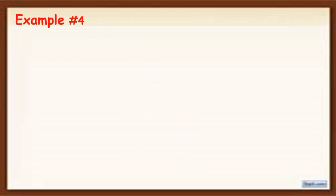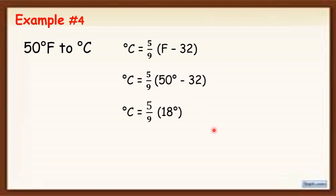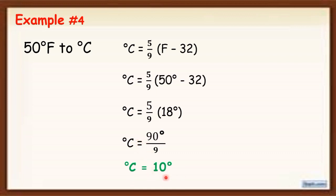Now, what if we have 50 degrees Fahrenheit to convert to degrees Celsius? The previous examples were Celsius to Fahrenheit; this one is Fahrenheit to Celsius, so we use a different formula: C = 5/9 × (F − 32). Substituting F = 50, simplify inside the parentheses first: 50 − 32 = 18. Then multiply 5 × 18 = 90, giving 90/9. The final answer is 10. Therefore, 50 degrees Fahrenheit equals 10 degrees Celsius.